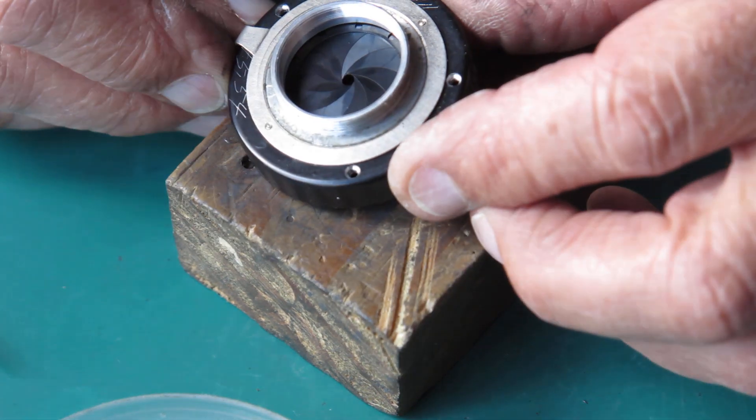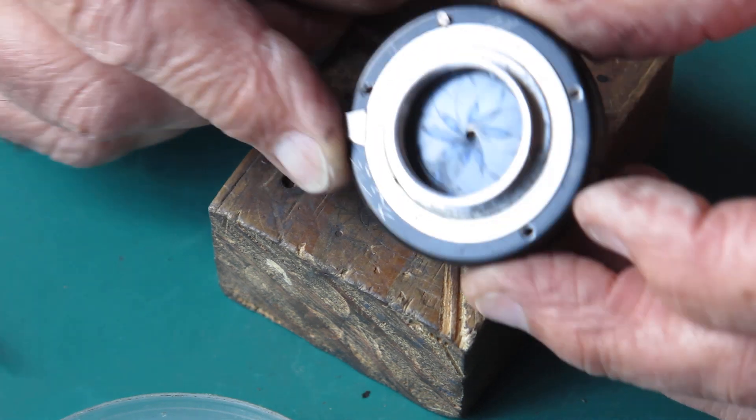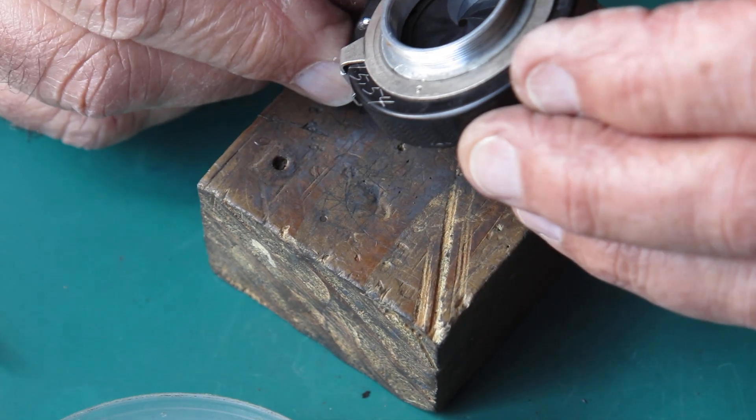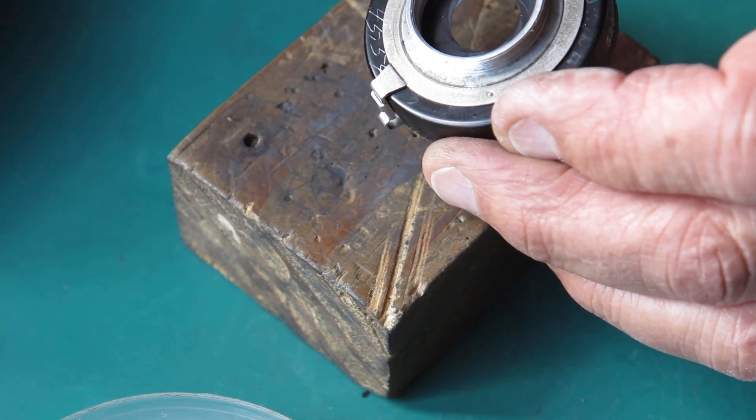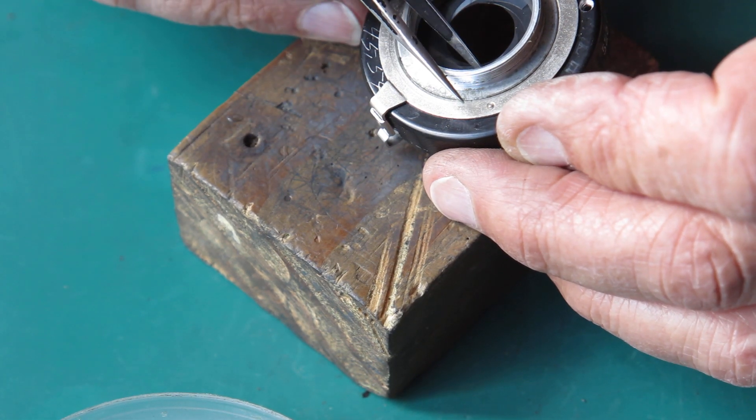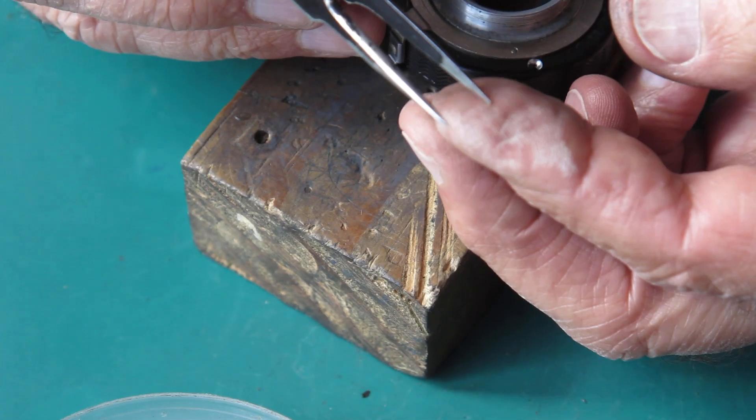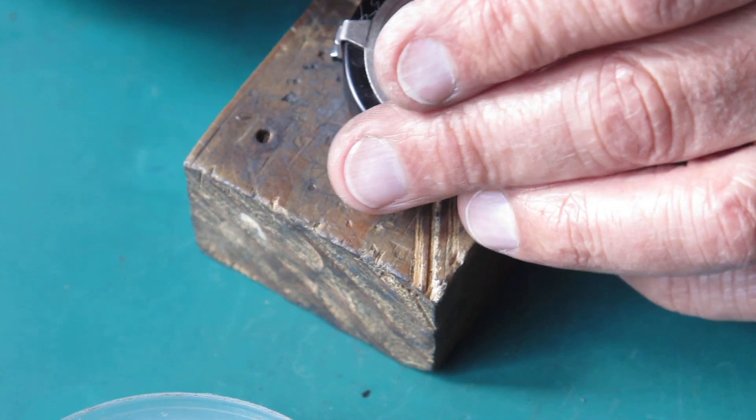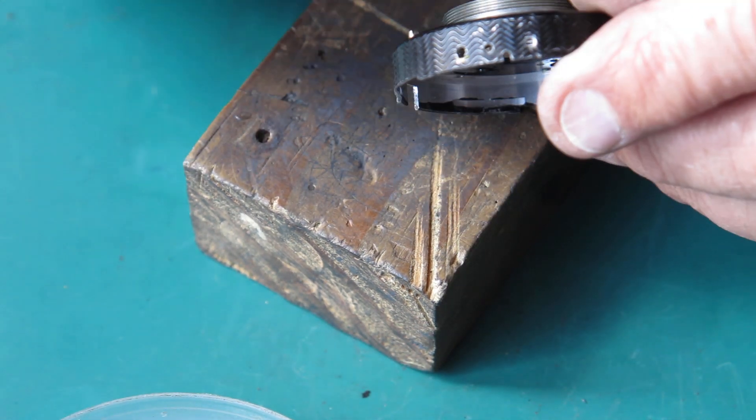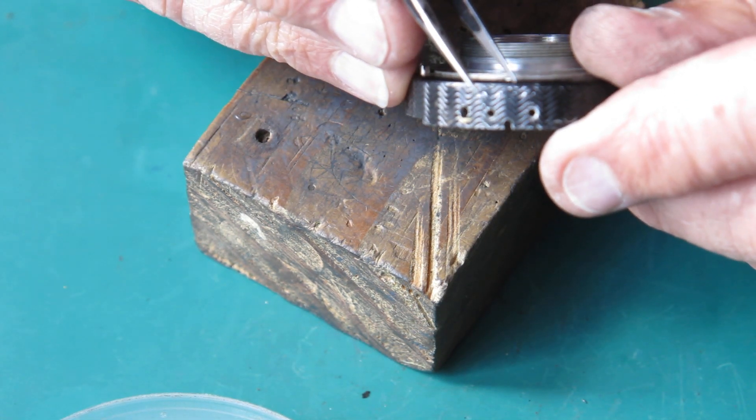Here's our case with the diaphragm blades in it. As you can see there's a fair bit of oil on those blades. They're a bit sticky and there are fragments of aluminum here. Now that's where someone drilled something out. It could be with no drilling holes in the shutter case.